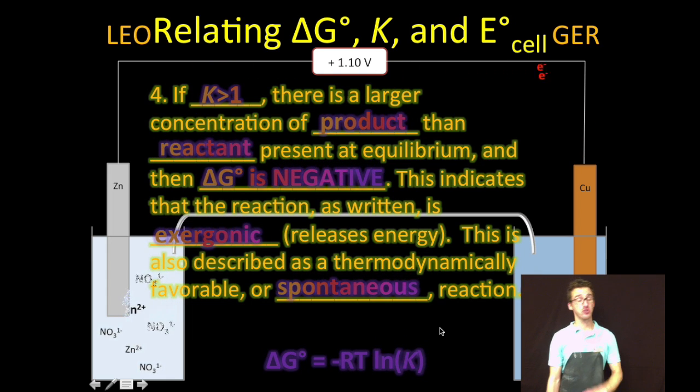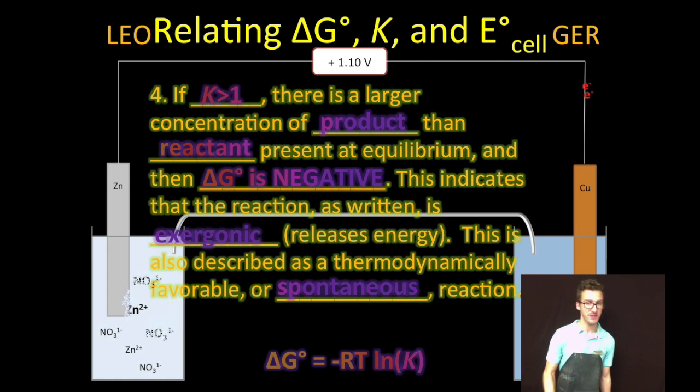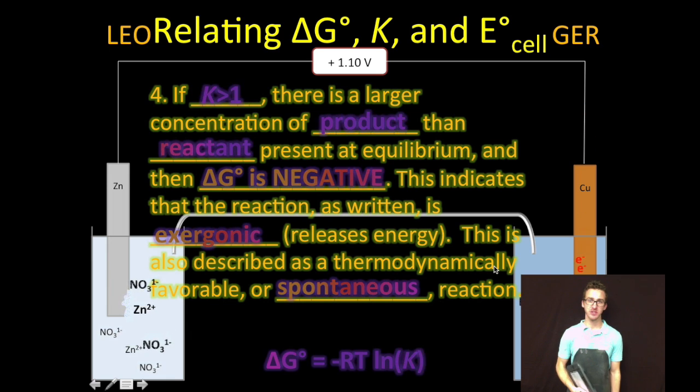However, if K is greater than 1, there is a larger concentration of product than reactant present at equilibrium. That means delta G will be negative. The reaction as written is exergonic. It releases energy. In other words, it's thermodynamically favorable or spontaneous. And as you think about this, when you take the natural log of a number greater than 1, you get a positive value. Positive times a negative, according to math, is going to give us a negative delta G value.